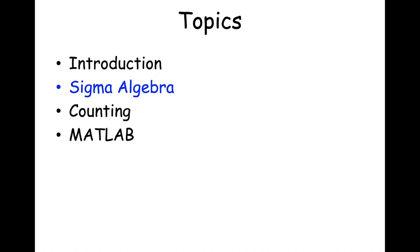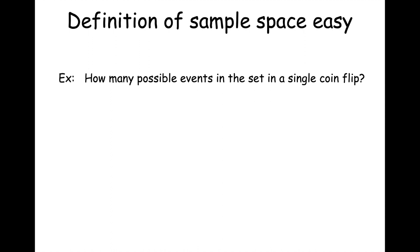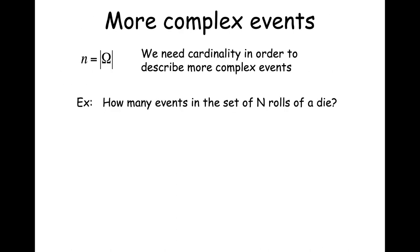Let's continue thinking about sigma algebra. For straightforward events like a single coin flip, it was easy to think about all possible events — heads or tails — and the sigma algebra over the coin sample space wasn't very complicated. When we looked at a die roll, we considered a more complex event involving N many rolls, computed the cardinality of the sample space, and devised a scheme for calculating its size.